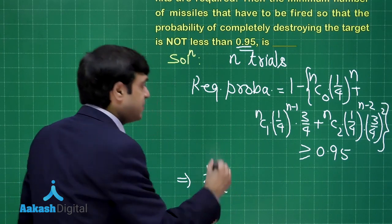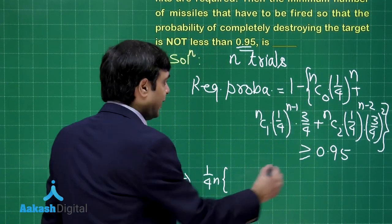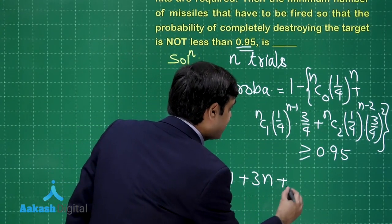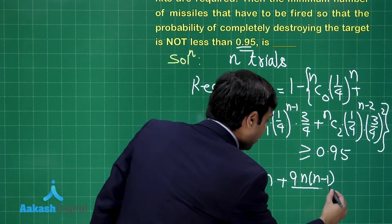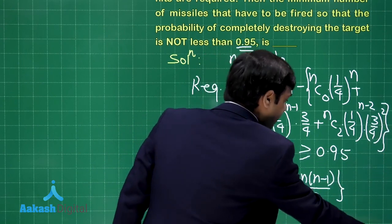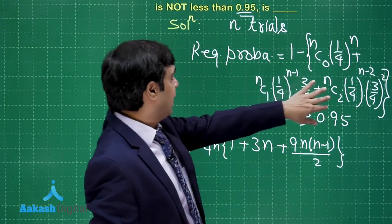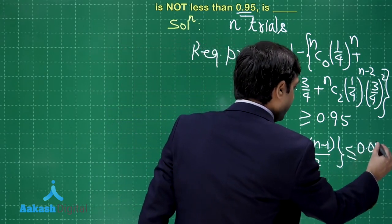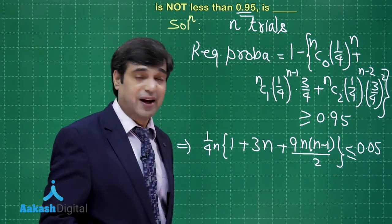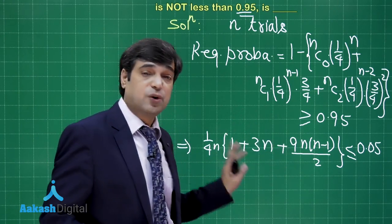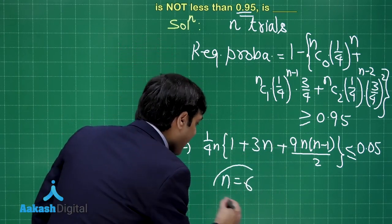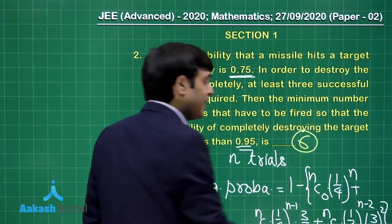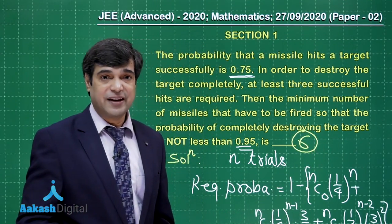Taking (1/4)^n as a common factor from the bracket, we are left with 1 + 3n + 9n(n-1)/2. Moving 0.95 to the other side, this expression must be ≤ 0.05, or 1/20. By hit and trial, n = 5 does not satisfy the constraint. The minimum value is n = 6, for which the constraint is satisfied. The correct answer is 6.